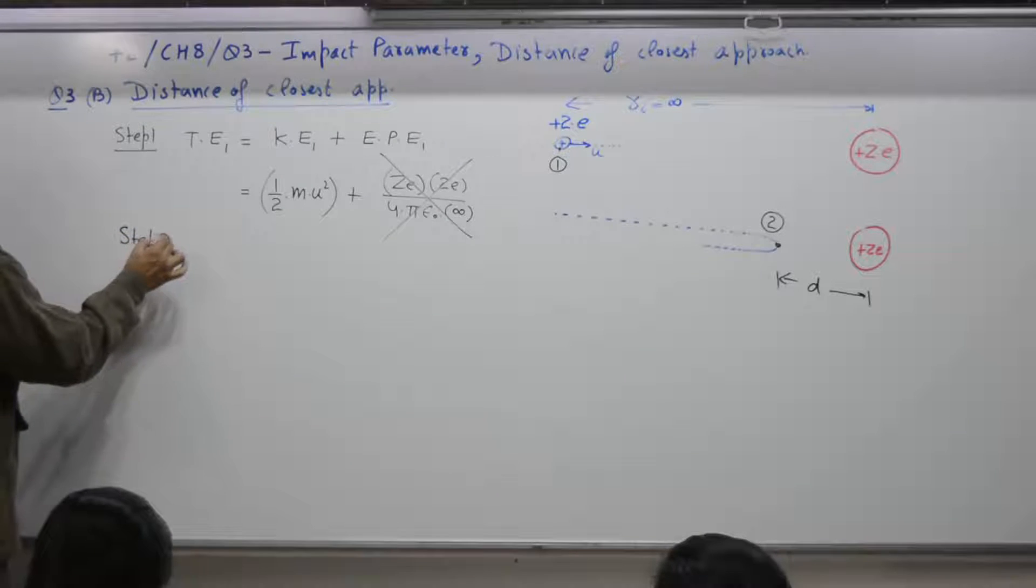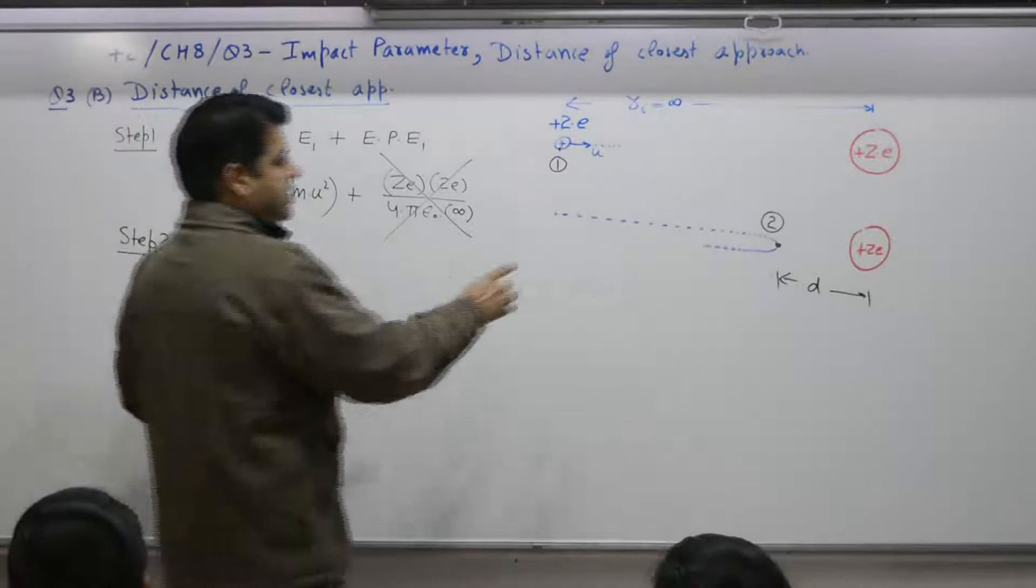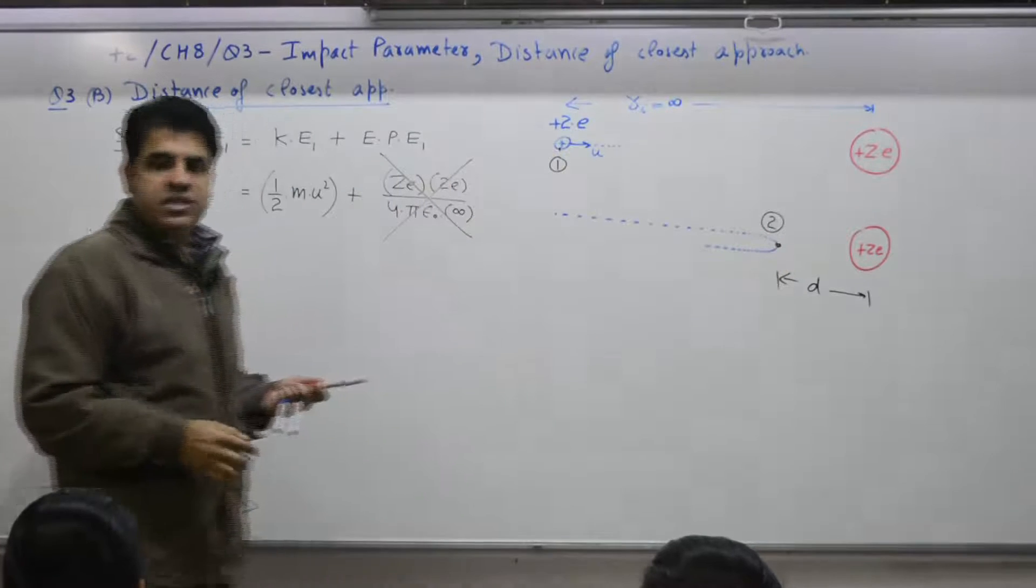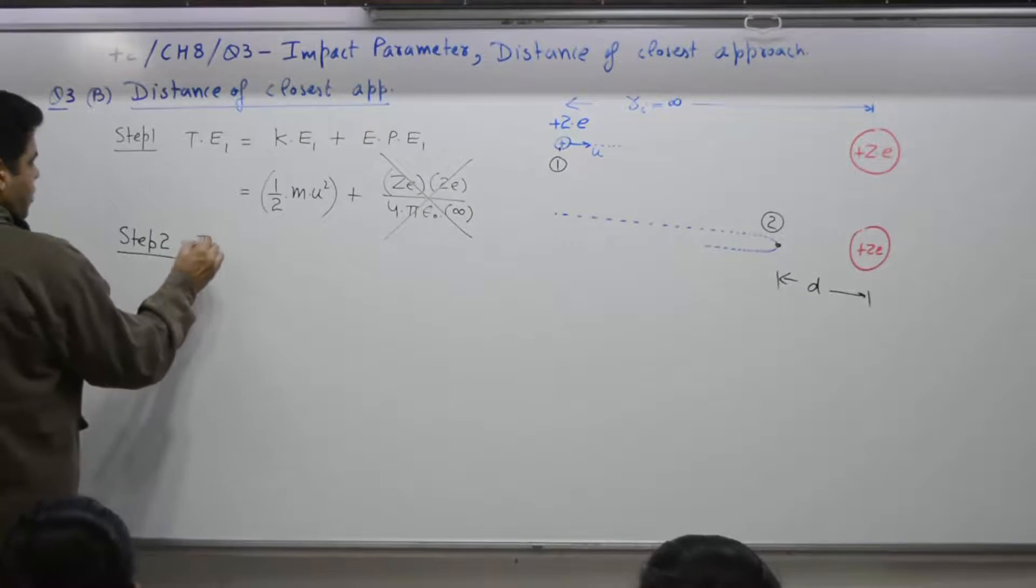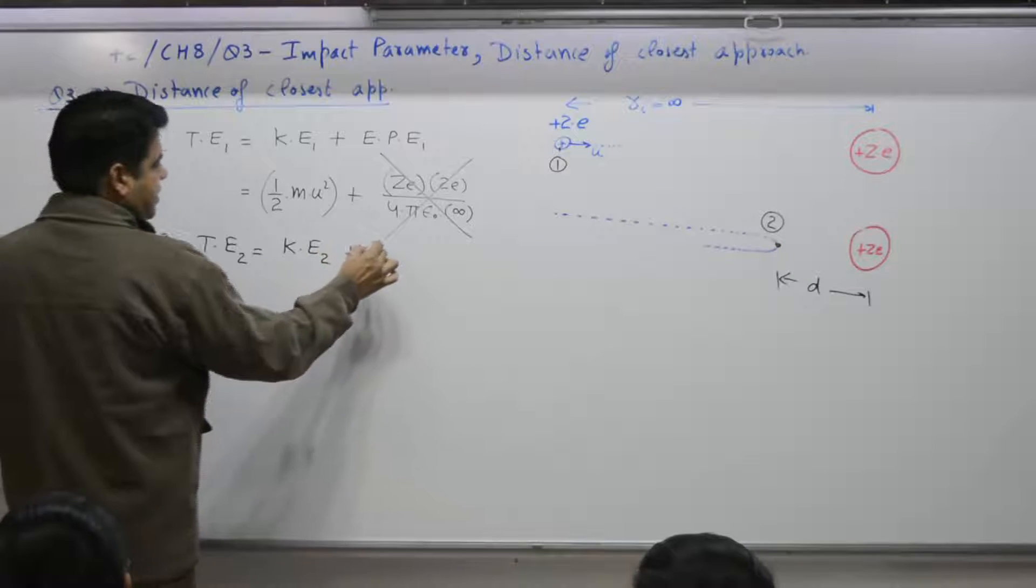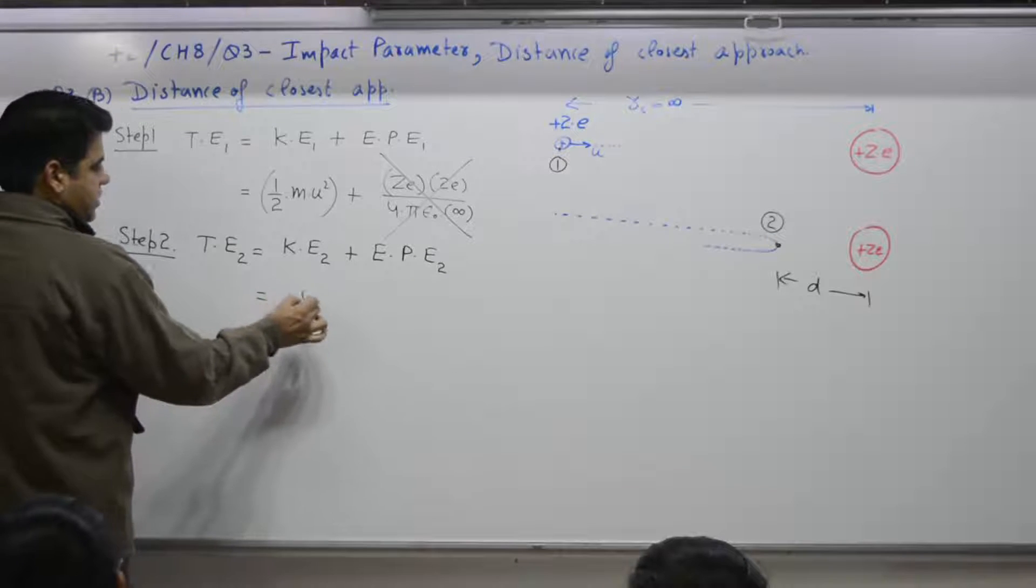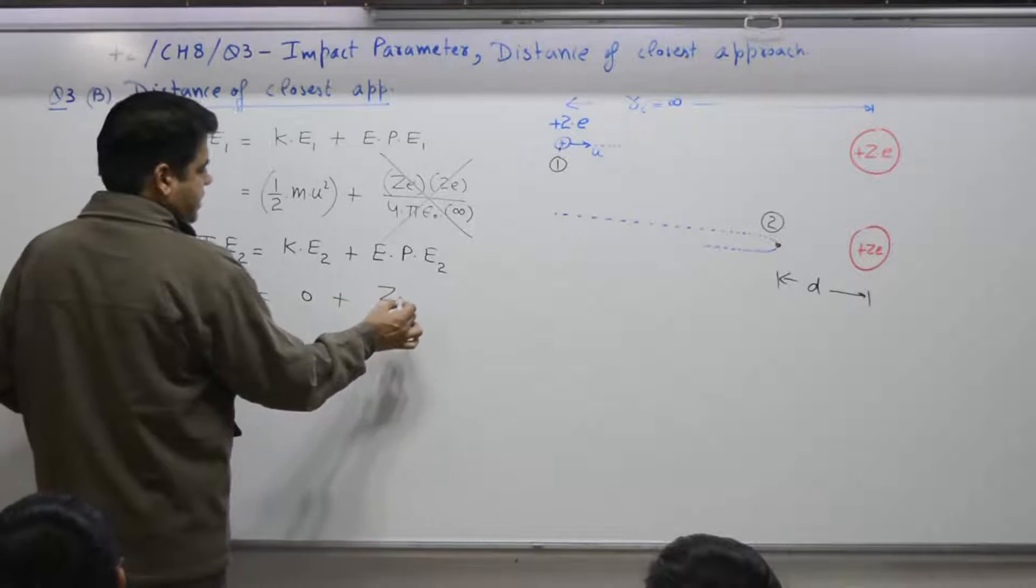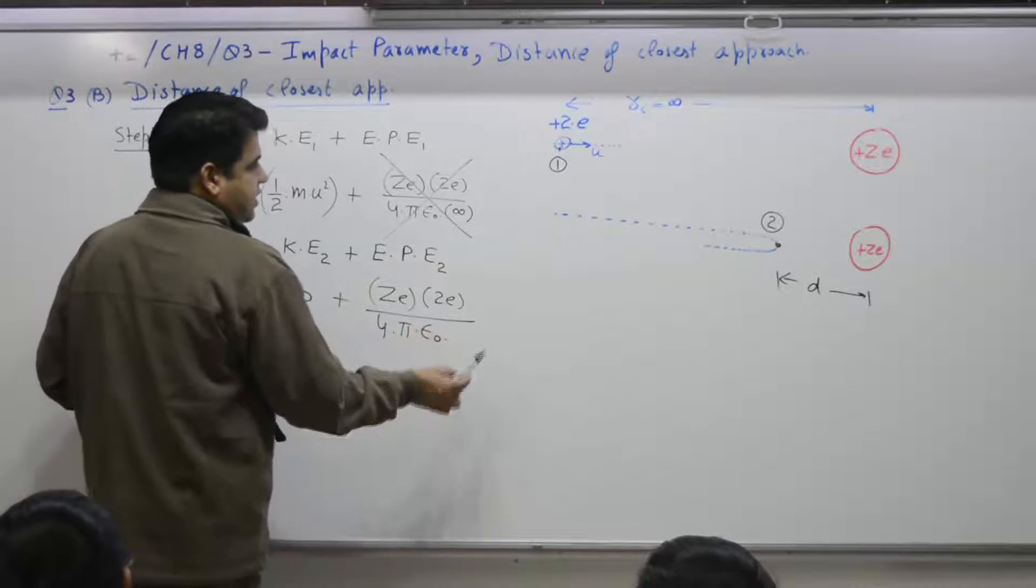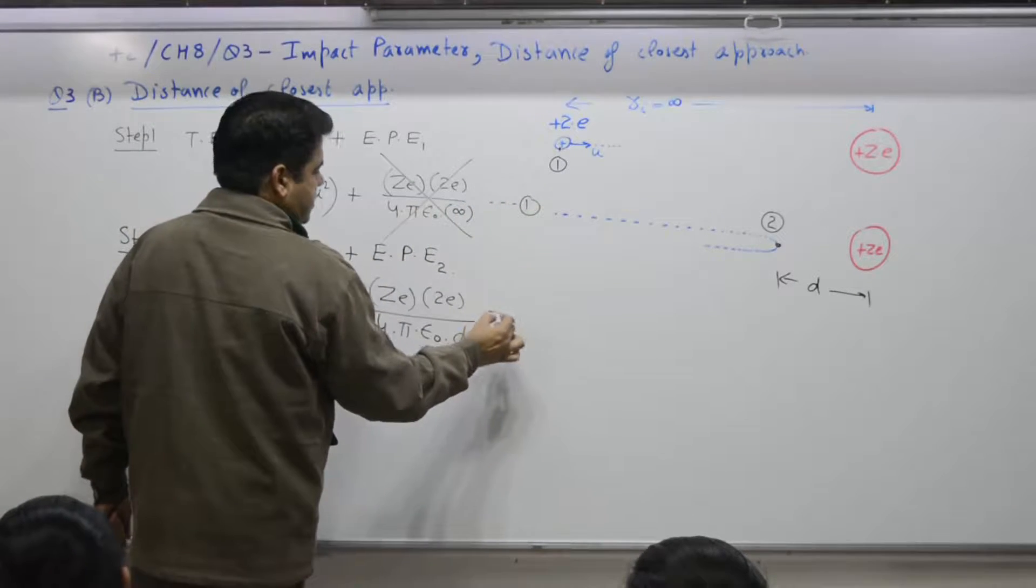Step 2. At this point. As it moves 100, 50, 30, 20, 10, 0. When it is 0, what is its kinetic energy? 0. Total energy at 2 is kinetic energy at 2 plus electric potential energy at 2. Kinetic energy at 2 is 0. Electric potential energy at 2 is Ze 2e divided by 4 pi epsilon naught. Distance between the 2 is what? D.